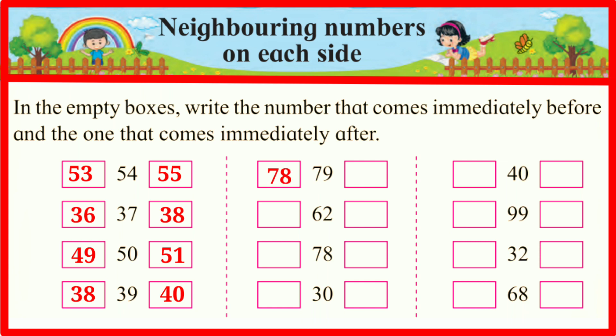78, and the number after 79 is 80. 62 — the number before 62 is 61, and the number after 62 is 63. 78 — the number before 78 is 77, and the number after 78 is 79.